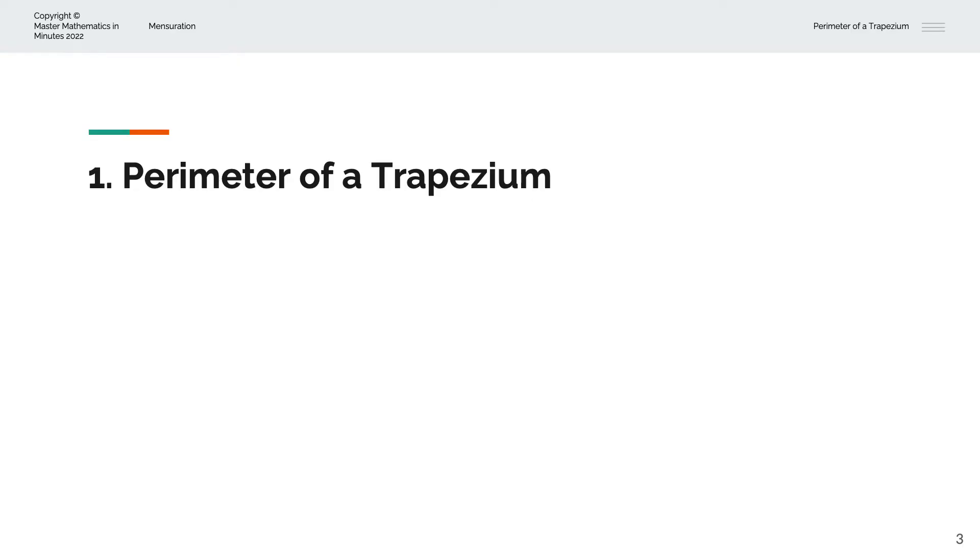So what is a perimeter of a trapezium? The perimeter of a trapezium is the sum of all sides. We'll have a look at this visually. So this is the first trapezium with sides A, B, C and D.